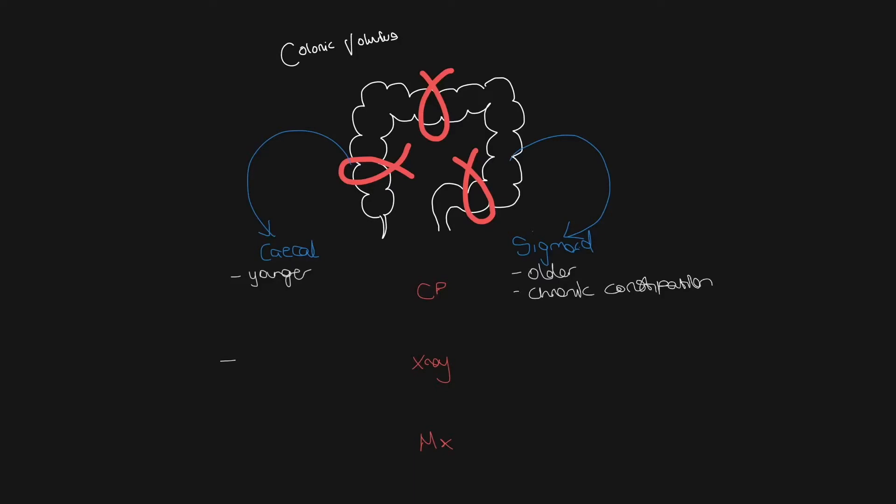And how do they look differently on x-ray? In cecal volvulus, you will see a dilated gas-filled viscous. This tends to arise in the pelvis and moves into the left upper quadrant.